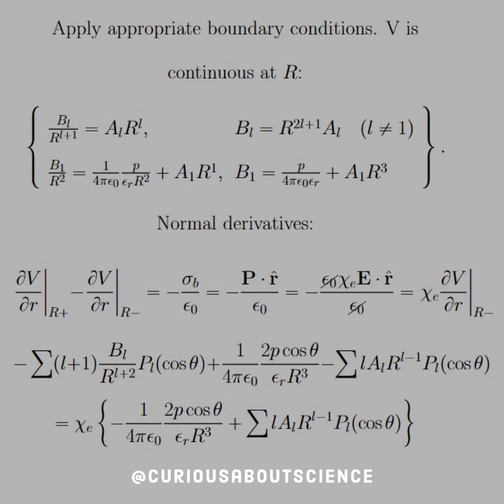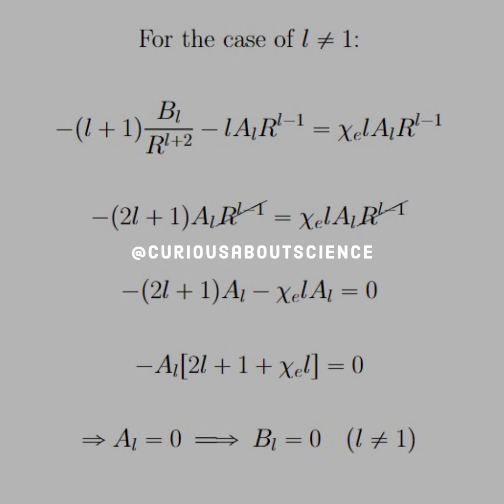And then that's equal to an expression multiplied by chi E. Again, that's because we substitute it back in from the bound charge all the way to the potential. Moving forward, again, as we discussed, we're going to have a case for L not equal 1 and L equal 1, thanks to the potential having cosine in it.